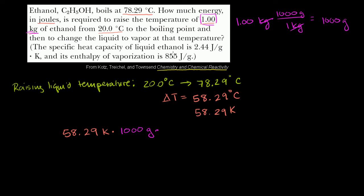So we have 1,000 grams times 1,000 grams, and then we just multiply this times the specific heat of ethanol, the specific heat capacity of ethanol, right here. 2.44 joules per gram Kelvin. So times 2.44 joules per gram Kelvin.